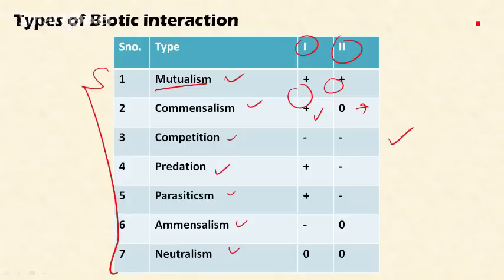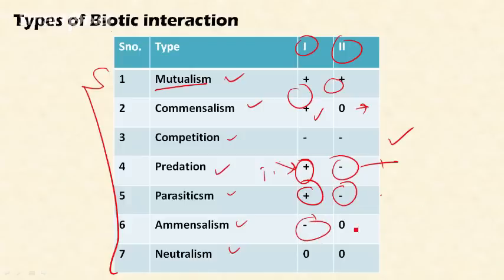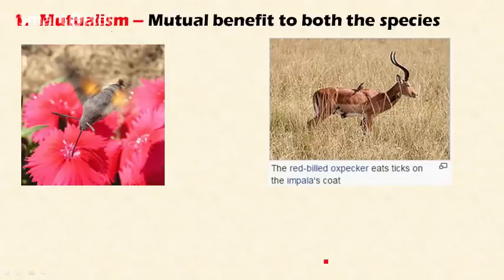In predation, one species is benefited — for example, if a tiger predates on a deer, the tiger gets food and the deer is killed, so the deer is at a disadvantage. In parasitism, the parasite is benefited and the host suffers a negative effect. In amensalism, one species has a negative outcome and the other remains unaffected. In neutralism, there is no effect between organisms — they remain neutral.